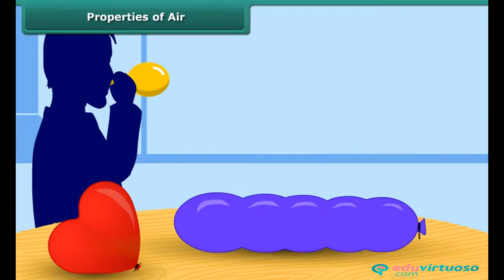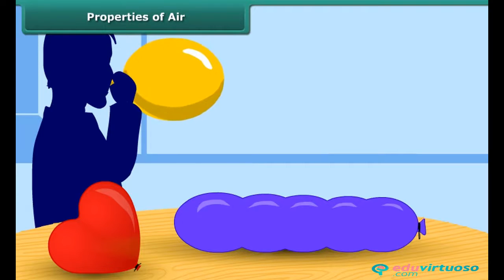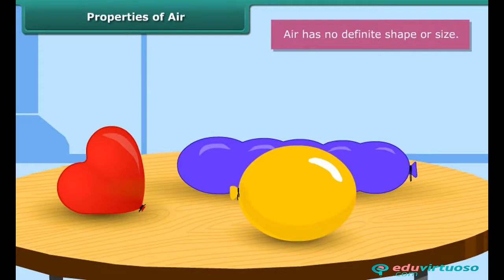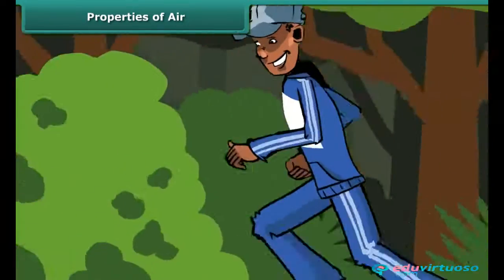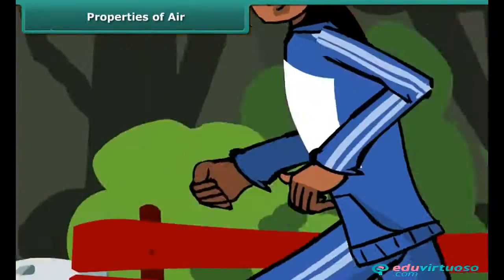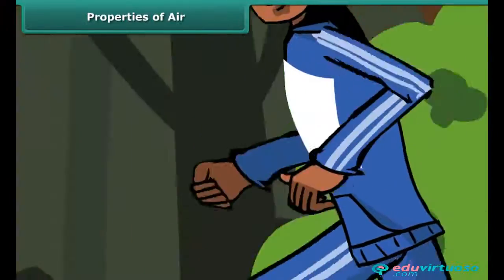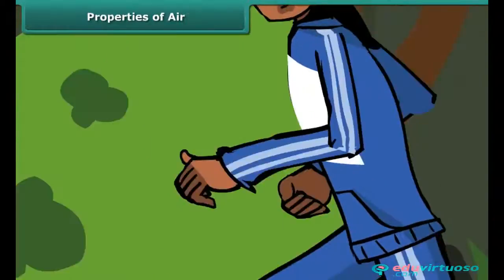Take three balloons of different shapes and sizes and blow air into all three. Do the air-filled balloons appear different from one another? That is because originally they had different shapes and sizes. Air has no definite shape or size — it occupies the shape of its container.